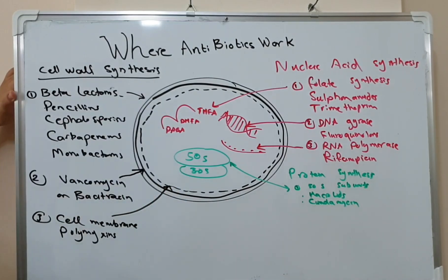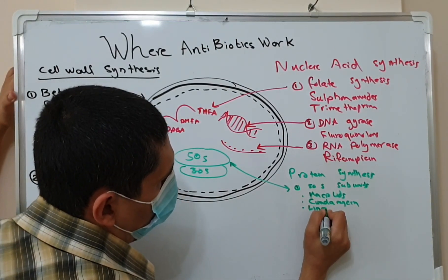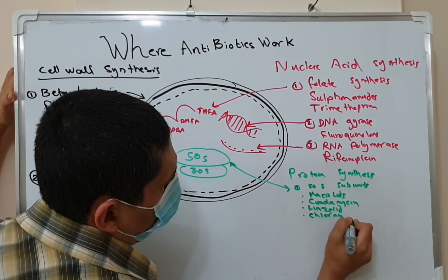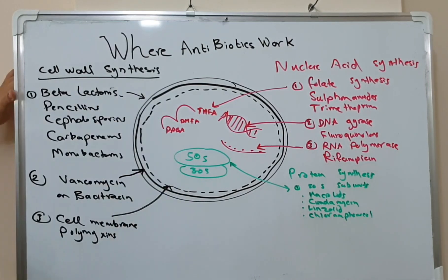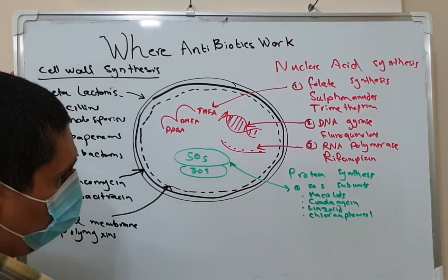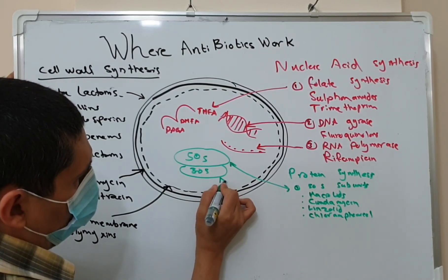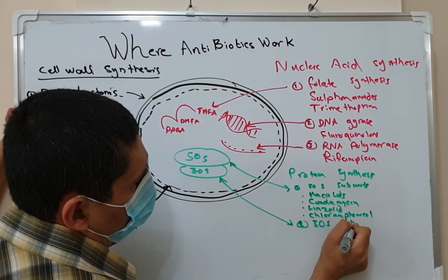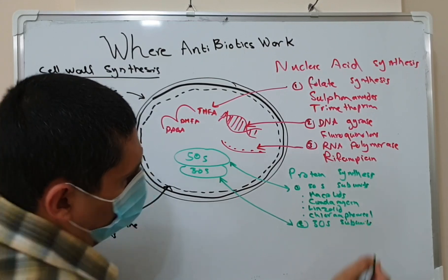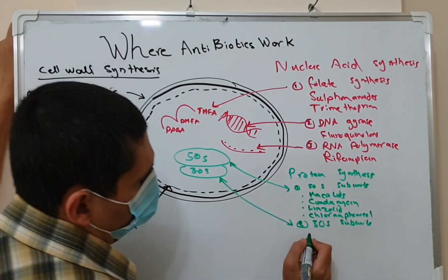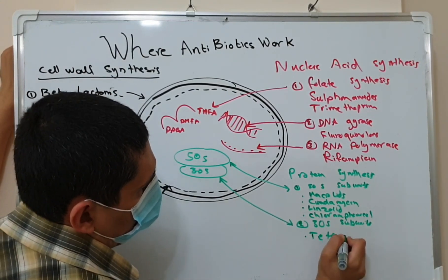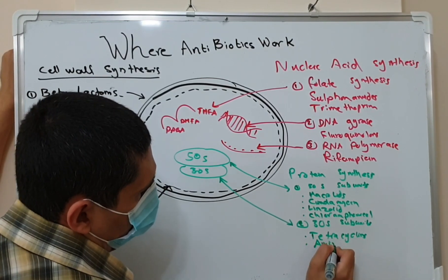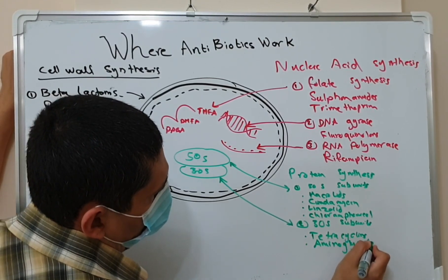Also linezolid and chloramphenicol work on the 50S subunit. The second group working on the 30S subunit includes tetracyclines and aminoglycosides such as gentamicin, amikacin, and tobramycin, among others. Thank you very much.